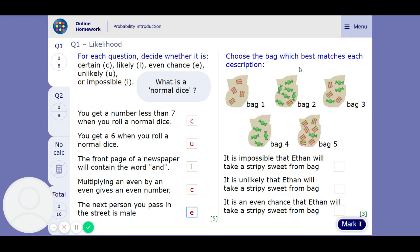Choose the bag which best matches each description. So we've got some Stripey Sweets, mostly non-Stripey Sweets but one, we've got about half and half, we've got all non-Stripey Sweets, and we've got mostly Stripey Sweets. So, it's impossible that Ethan will take a Stripey Sweets from the bag. Well, impossible, it's got to be bag 4, because there's got none in there at all.